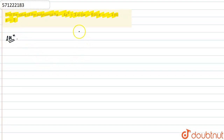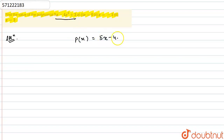Firstly, we are given a polynomial. Let's say this polynomial is p(x), which is equal to five x minus four x squared plus three. We need to find the value of this polynomial.